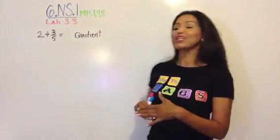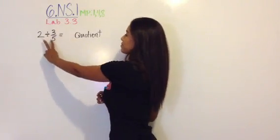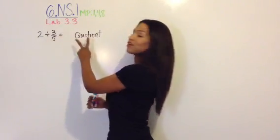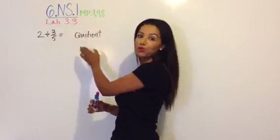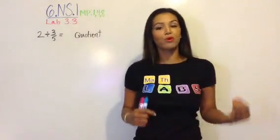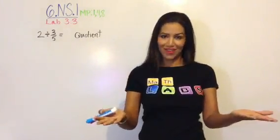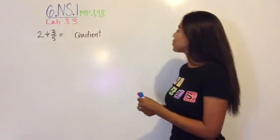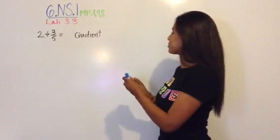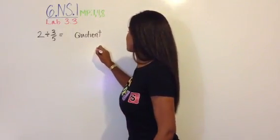So we're going to get right to it. This particular problem is 2 divided by 3 fifths — we are finding the quotient. And as you know, the quotient is the answer when you divide. So let's look at that problem: 2 divided by 3 fifths.